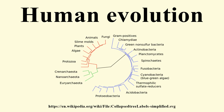Out of Africa is also supported by the fact that mitochondrial genetic diversity is highest among African populations. A broad study of African genetic diversity, headed by Sarah Tishkoff, found that the San people had the greatest genetic diversity among the 113 distinct populations sampled, making them one of 14 ancestral population clusters. The research also located the origin of modern human migration in southwestern Africa, near the coastal border of Namibia and Angola. Studies of haplogroups in Y-chromosomal DNA and mitochondrial DNA have largely supported a recent African origin. Evidence from autosomal DNA also predominantly supports a recent African origin.